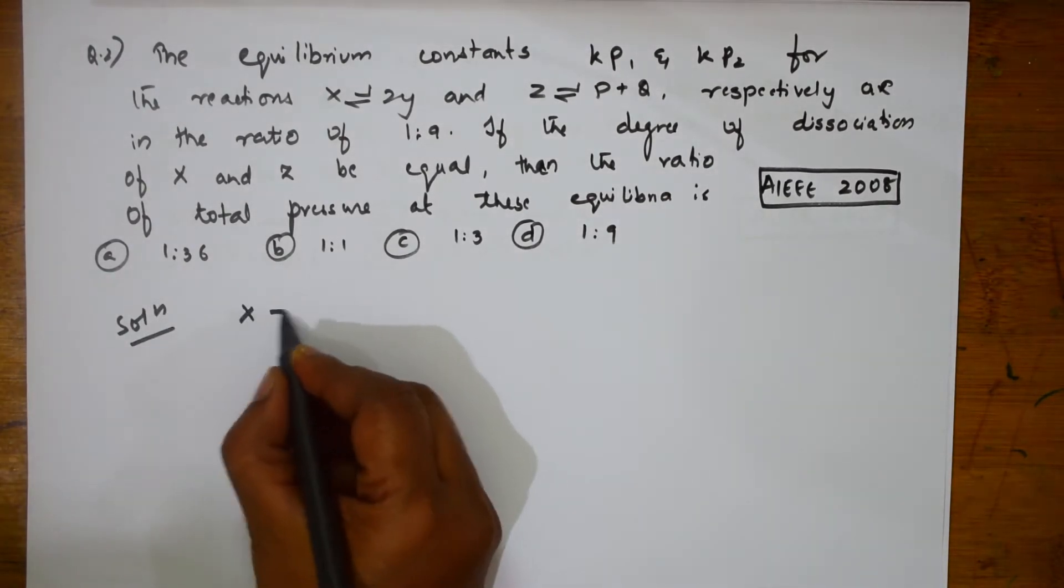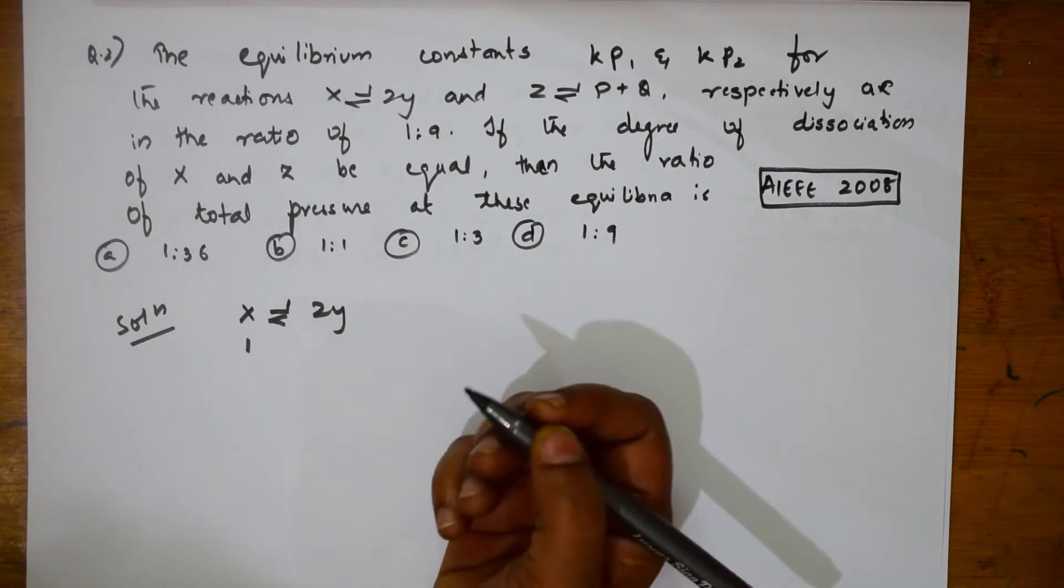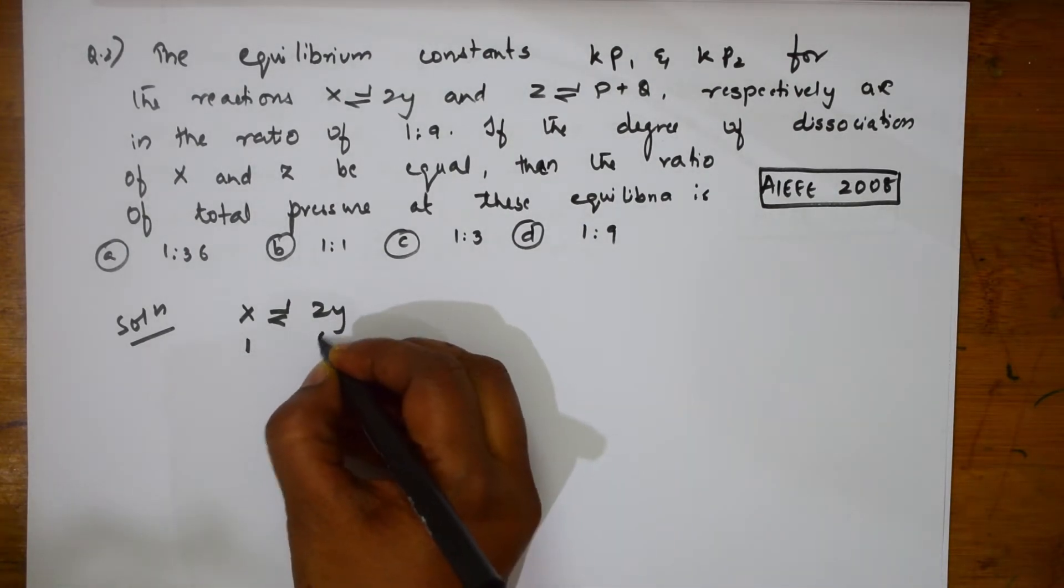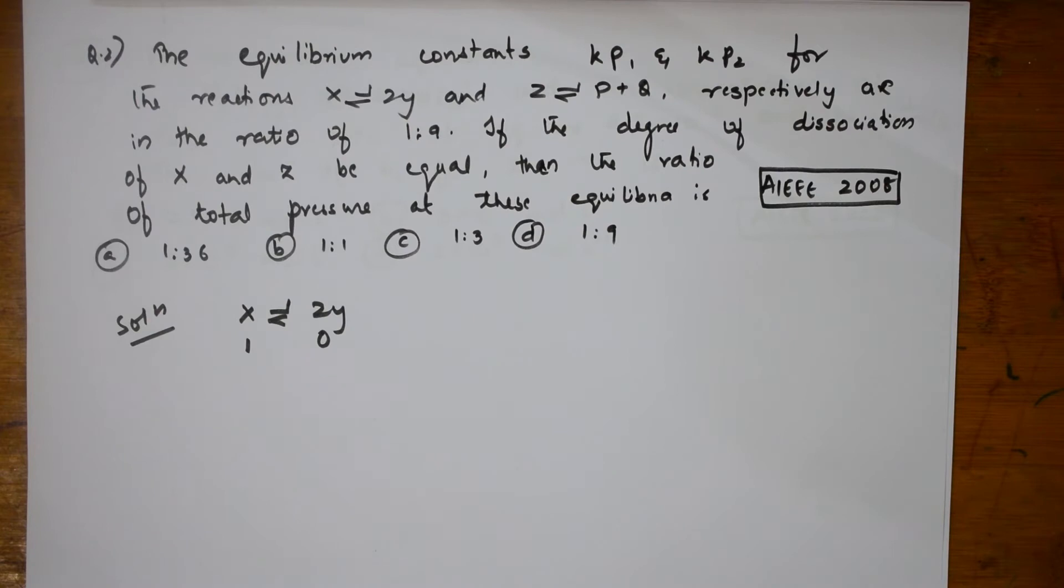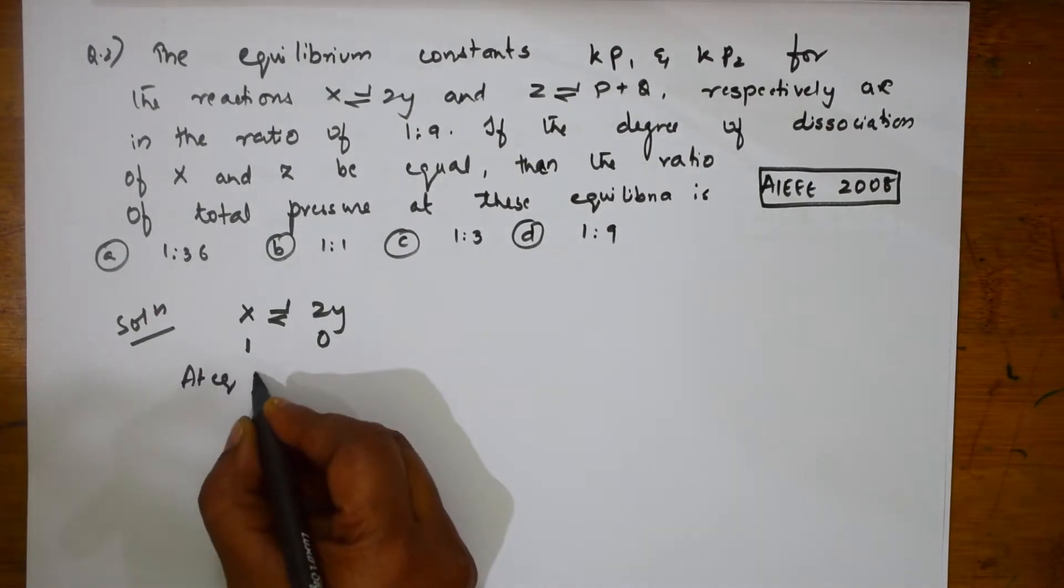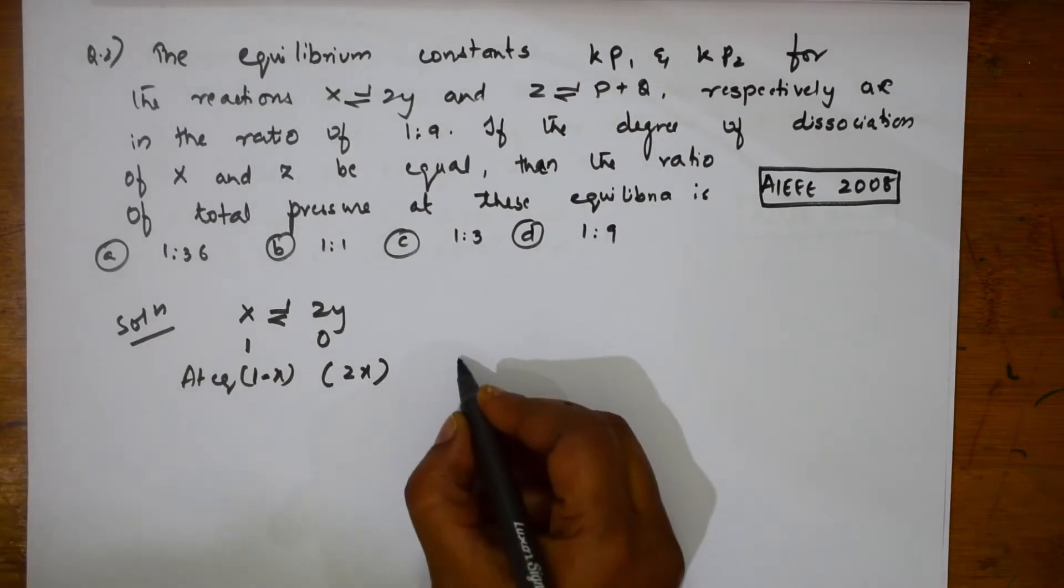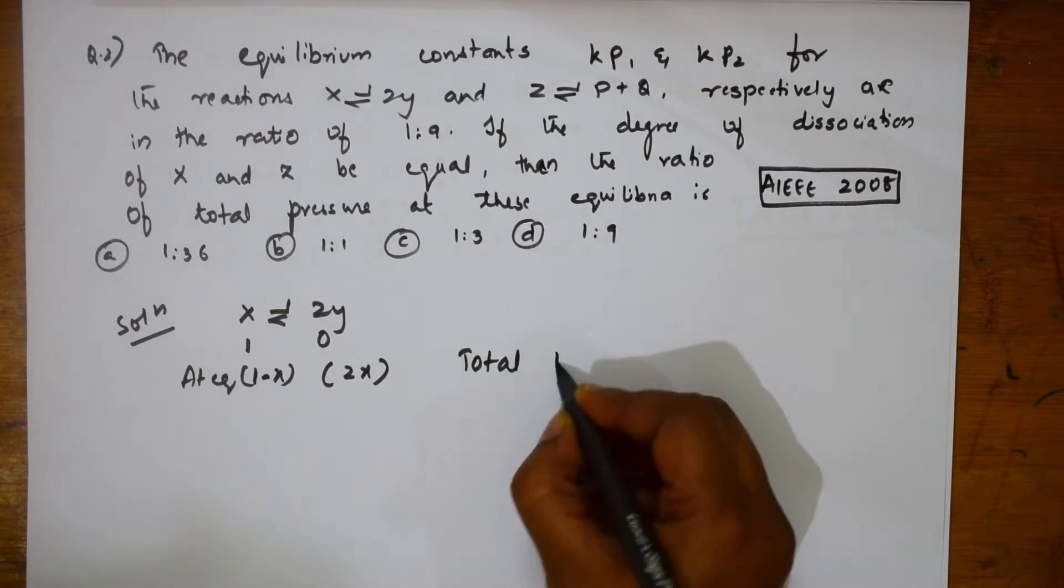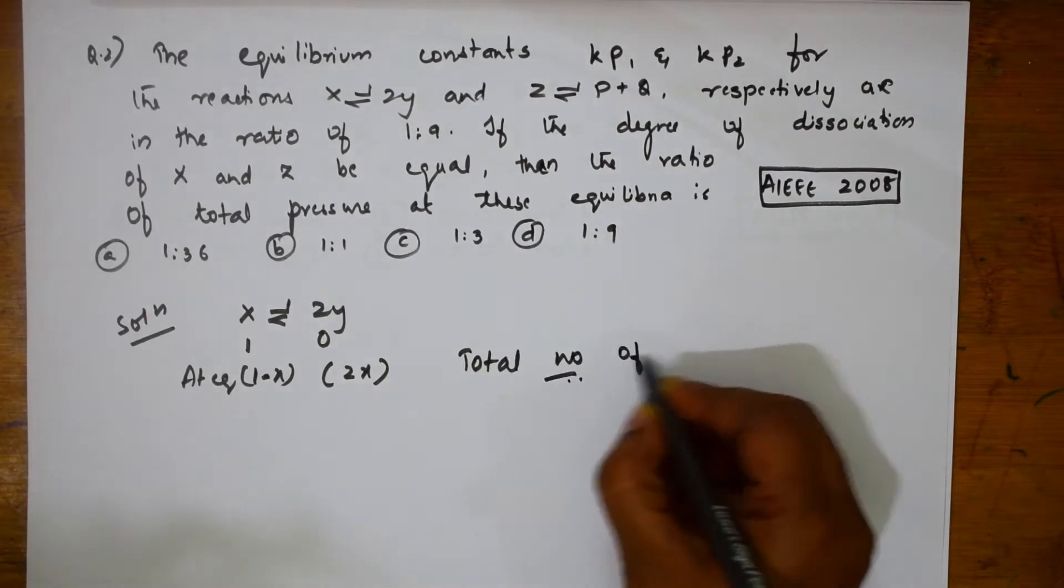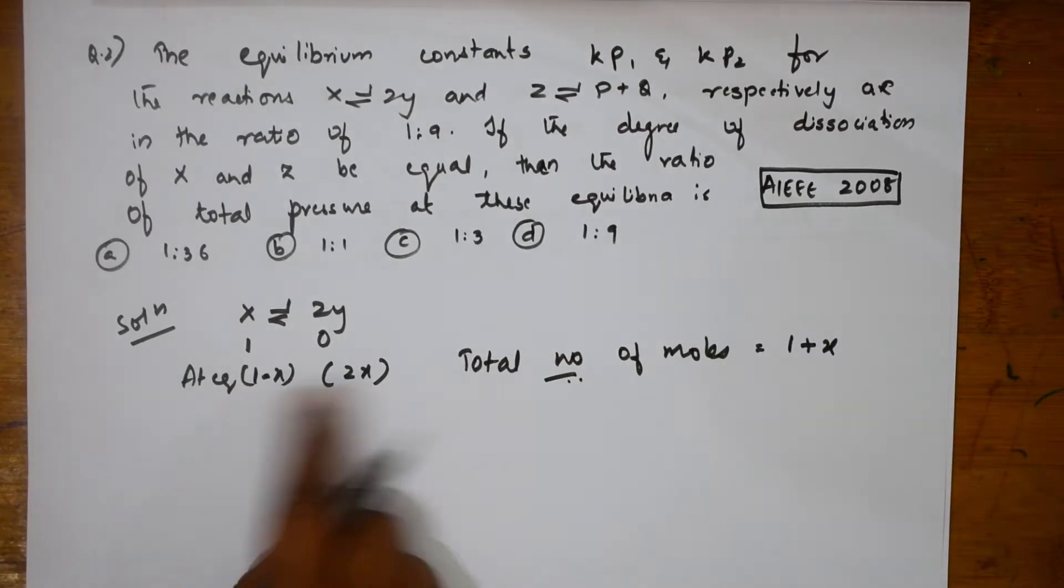Now, what do they say? X is in equilibrium with 2Y. Initially the number of moles of X is 1 and the number of moles of Y is 0. Now at equilibrium what will happen? This becomes 1 minus X and this becomes 2X. Now what will happen to the total number of moles? Total number of moles is equal to 1 plus X when you take out this.